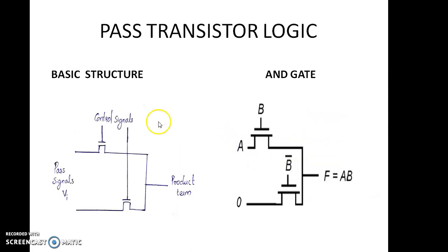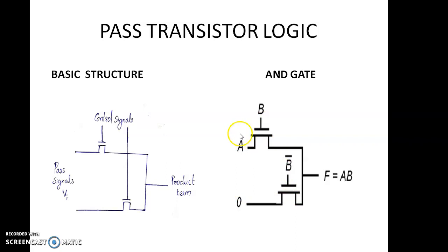Next, pass transistor logic. Here two signals: control signals and pass signals. Control signals are applied to the gate terminals; pass signals are applied to the source terminals. This is the basic structure. Here B and B complement are the control signals; A and 0 are the pass signals. If B = 1, A will pass to the output. If B = 0, then 0 passes to the output. From here: AB + A_complement·0 = AB. That is our final output F = AB. This is an AND gate.